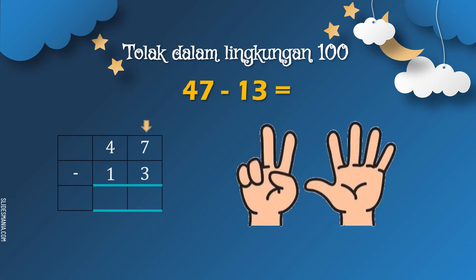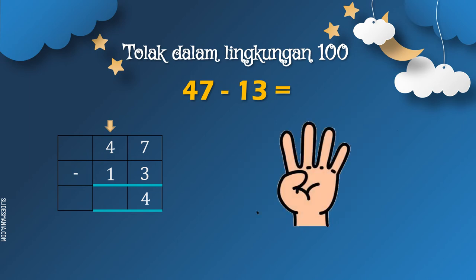Keluarkan 7 jari. Kita akan tolakkan dengan 3 — tutupkan 3: 1, 2, 3. Kita kira berapa lagi jari yang tinggal: 1, 2, 3, 4. Jadi, 4 lagi jari yang tinggal. Kita tuliskan jawapannya 4. Tolakkan yang di depan pula, yang di sebelah kiri, iaitu 4 tolak 1. Keluarkan 4 jari dan kita tutupkan 1 jari. Sekarang kita kira berapa jari yang tinggal: 1, 2, 3. Jadi, 3 jari yang tinggal. Kita tuliskan jawapannya 3. Jadi, 47 tolak 13 sama dengan 34.